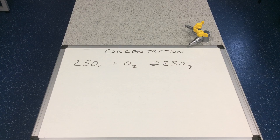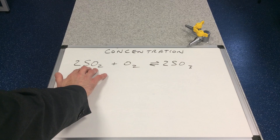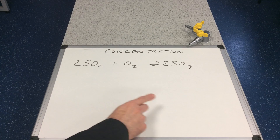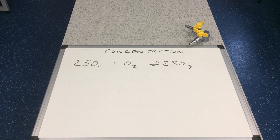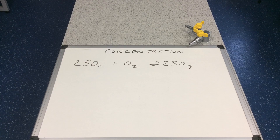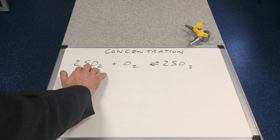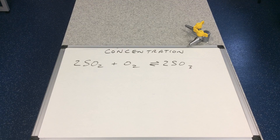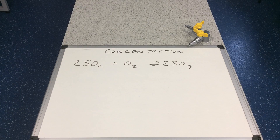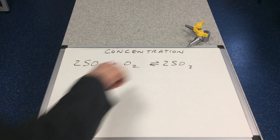Let's imagine the system is at equilibrium and then we change the concentration by adding more sulphur dioxide. This will upset the position of the equilibrium. Le Chatelier's principle states that the equilibrium will shift to minimise what you've done — it wants to get rid of the extra SO₂. So more oxygen will react with the extra SO₂ and that will send the equilibrium over to the right hand side.